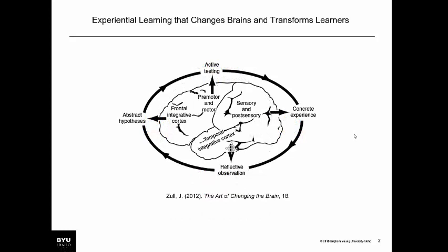A biologist named James Zoll wanted to test Kolb's theory through a series of brain imaging scans, to see if different parts of the brain mapped to the different steps of Kolb's learning cycle. True to form, he found that when learners observed an experience through sight, smell, taste, hearing, and feeling, the sensory and post-sensory parts of their brain were activated. As they made reflective observations, the temporal integrative cortex was activated. As they hypothesized, their frontal integrative cortex became activated. And through actively testing hypotheses, the motor part of the brain was activated. He found support for David Kolb's experiential learning construct.